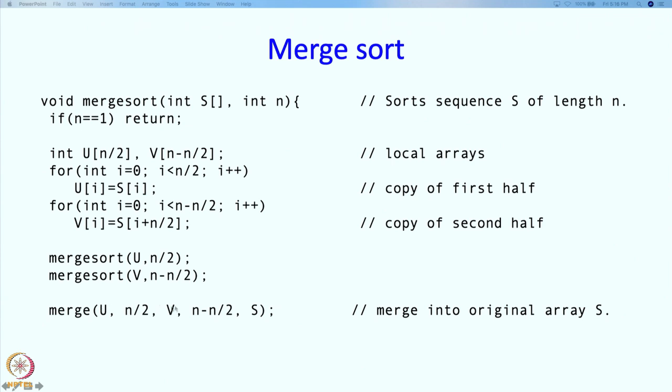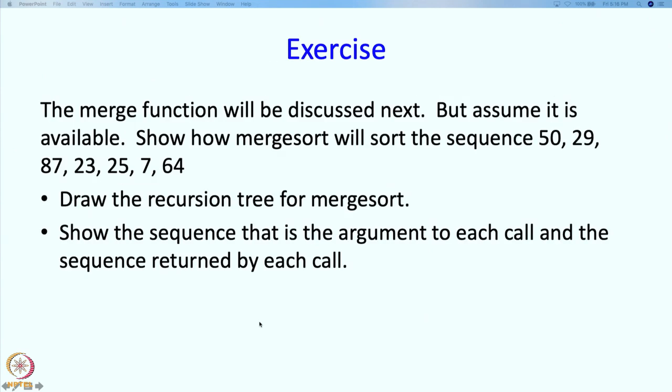Now, I am going to merge these 2 sequences. u and v are the 2 sequences that I had and I am going to get them merged into s. That is it, because s will have the final sorted sequence which is exactly what we wanted. The result had to be in s itself. That is what we are going to have.